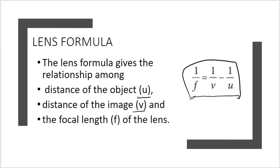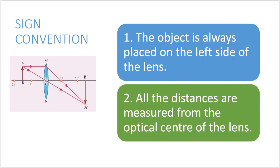There are six different sign convention rules. The first convention is: the object is always placed on the left side of the lens. The second convention is: all distances are measured from the optical center of the lens.